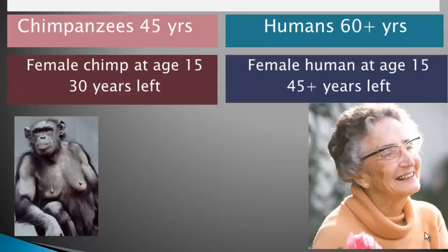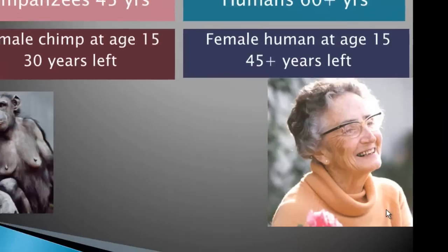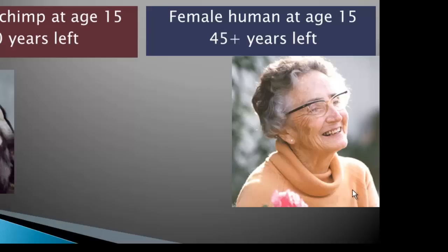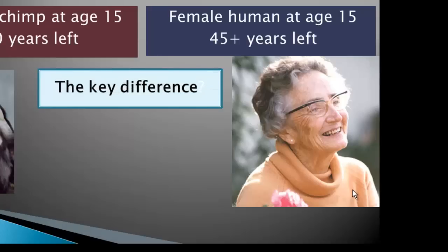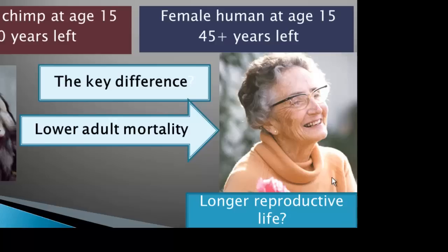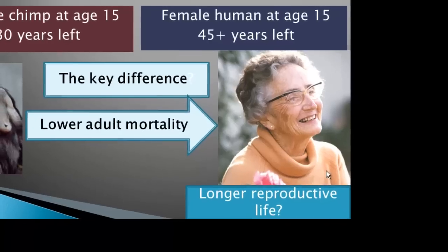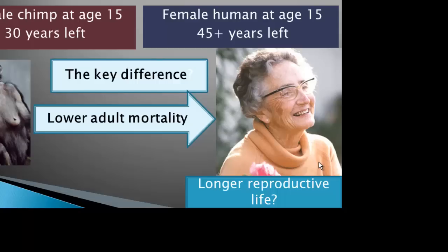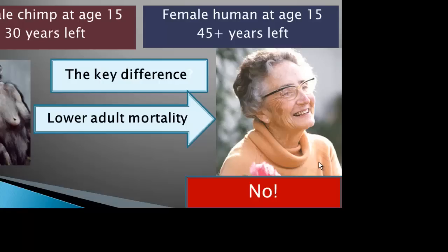When a human female reaches age 15, she has 45 or more years left. One thing we might think is that this must have to do with a longer reproductive period, but this isn't the case. What explains this discrepancy? One key difference is simply lower adult mortality in human societies than among chimpanzees — and this is in traditional societies. Infant mortality rates are not all that different between humans and chimps, but adult mortality rates are much lower for human females than for chimpanzee females. Again, we might think this must mean human females have a longer reproductive life than chimpanzee females, but that's not the explanation.